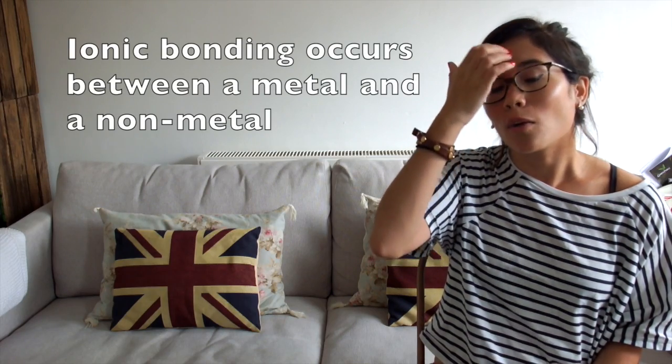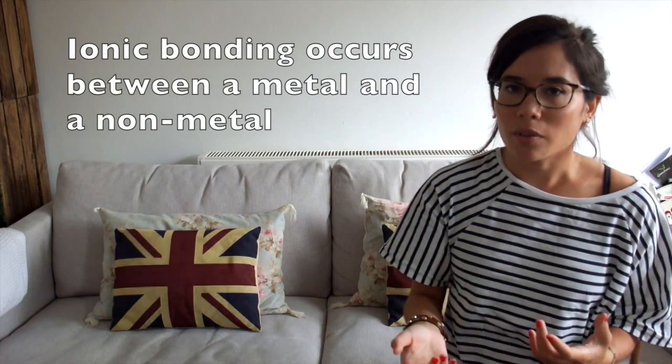In order to actually understand ionic bonding, we need to remember that it occurs between metals and non-metals, and that's a really, really crucial point. I see too often people losing marks because they draw a covalent bond when they mean to draw an ionic bond. So remember, between a metal and a non-metal, it's going to be ionic bonding.